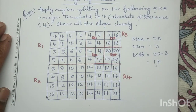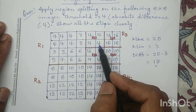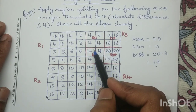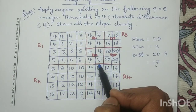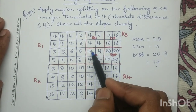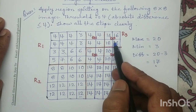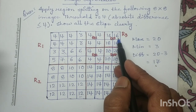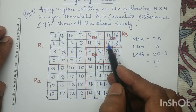Now in each sub-region we check the thresholding condition. In R31, all pixels have the same coefficient 4, so the absolute difference is 0, which is acceptable. Similarly in R32, all pixels have the same coefficient so the absolute difference is 0, and we will not subdivide R32. In R33, the maximum value is 18 and the minimum value is 16, giving a difference of 2, which is acceptable, so we will not further split R33.